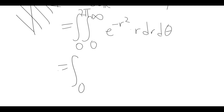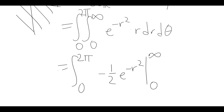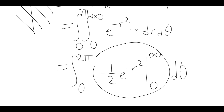This is something we can integrate because it's basically the derivative of e to the minus r squared. So we get the integral from 0 to 2 pi, and the antiderivative of r e to the minus r squared is minus one-half e to the minus r squared — when you differentiate that, the chain rule brings down an r with that minus one-half. We evaluate this at 0 and infinity, then integrate with respect to theta. At infinity you get 0, and at 0 you get negative one-half, so it's 0 minus negative one-half, which is one-half. So we're integrating one-half from 0 to 2 pi, and we end up with just pi.